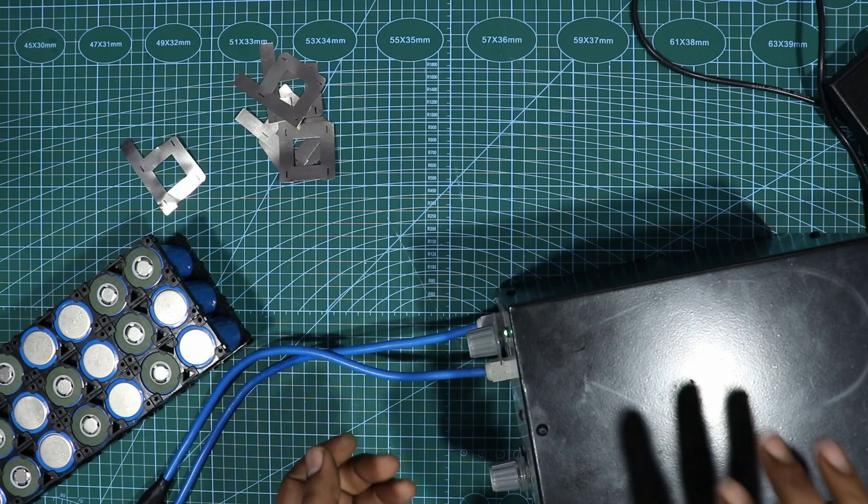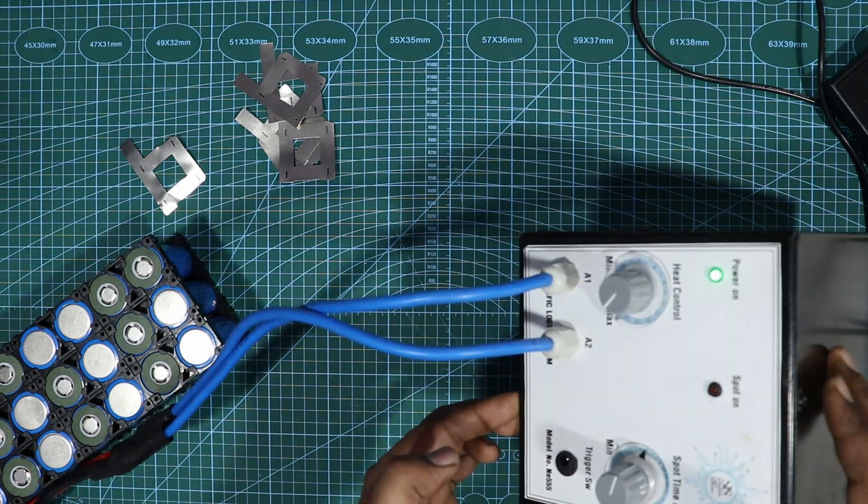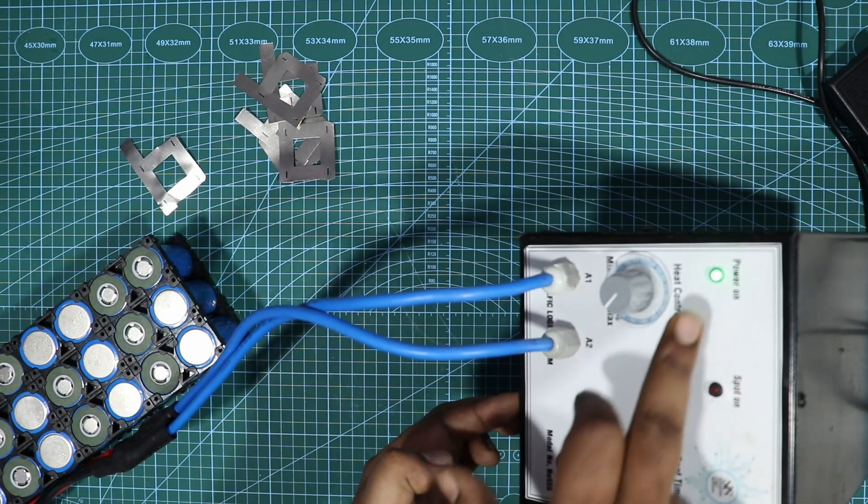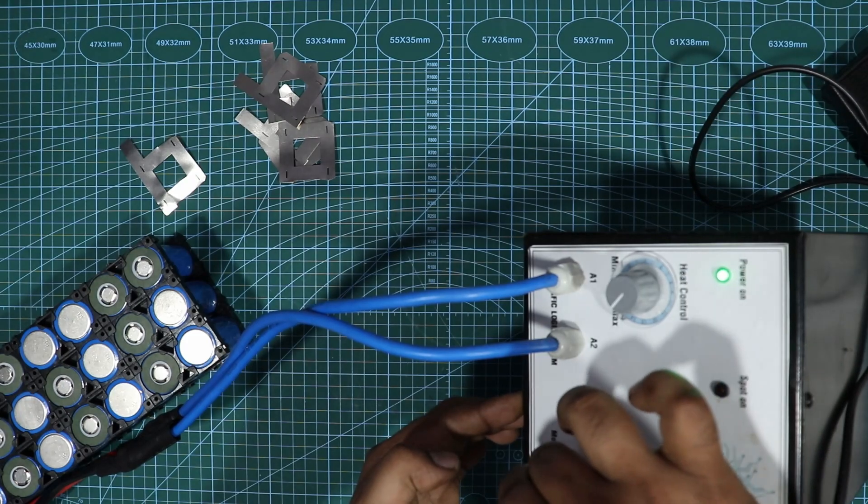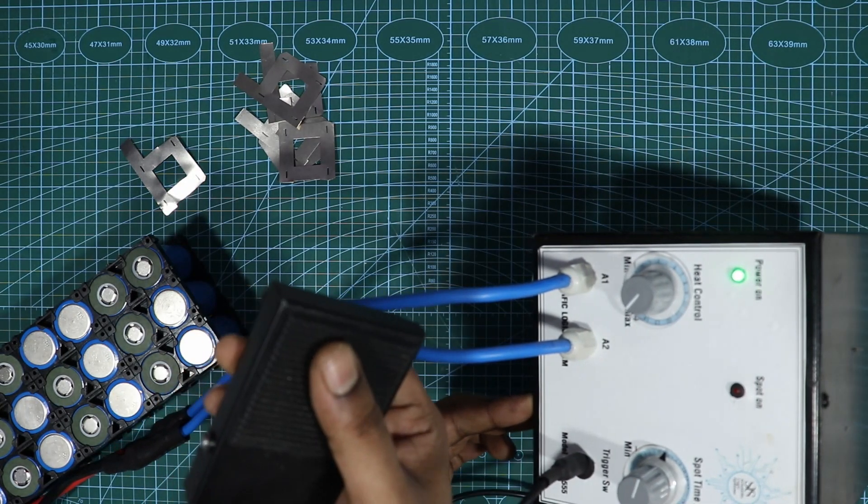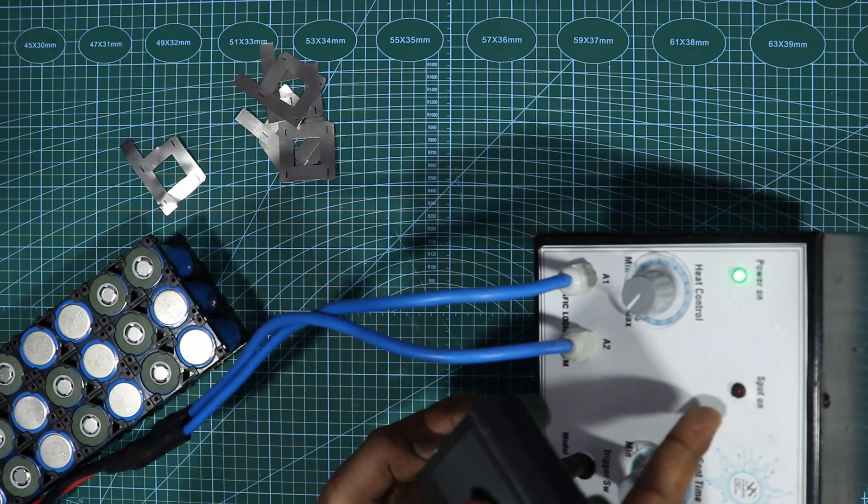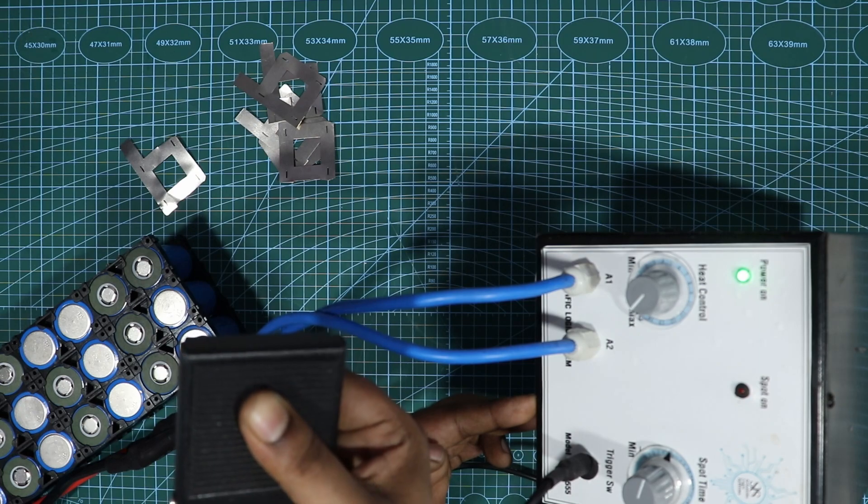So as soon as you power on there's this green LED that would glow indicating that there's power going inside the spot welder. Now let me connect the foot pedal and I'll trigger that across to you. So whenever you press it you have that red indication confirming that there's current going to the transformer.